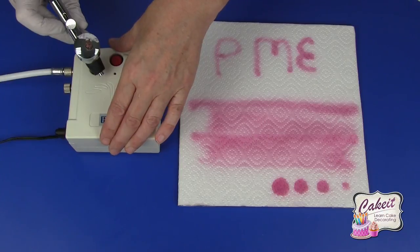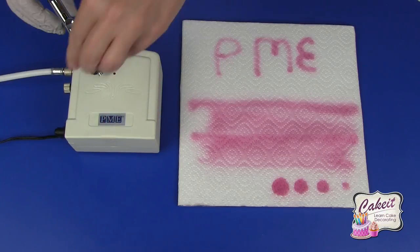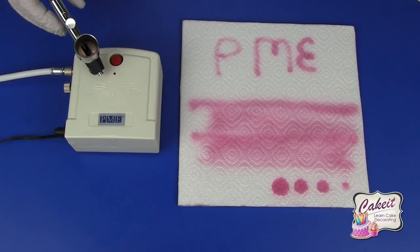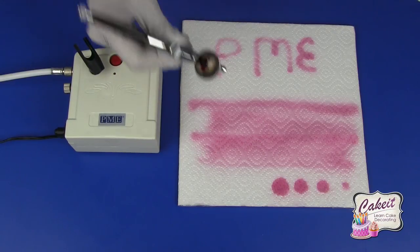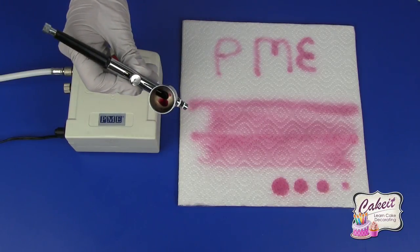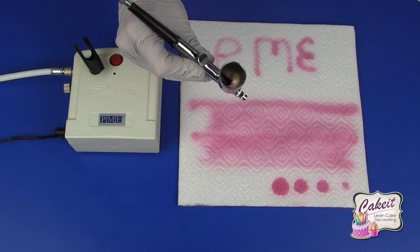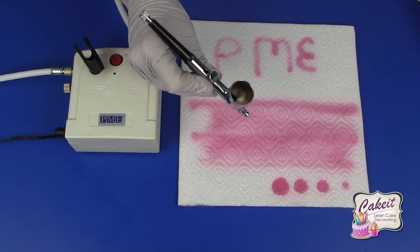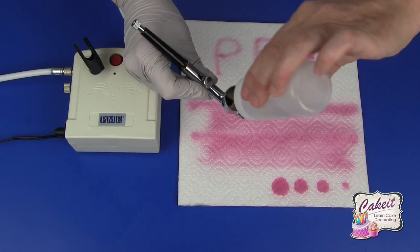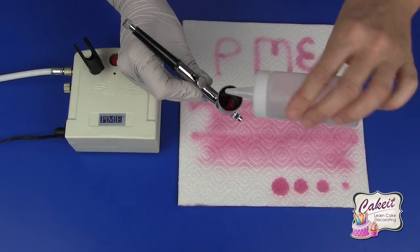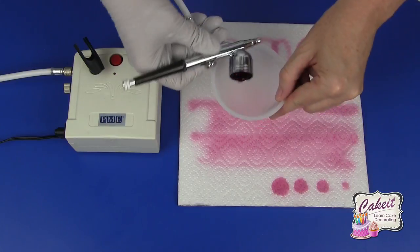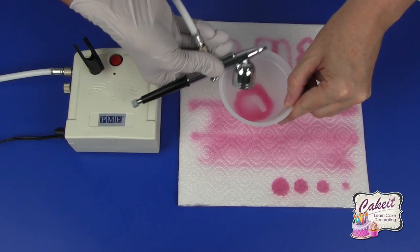So now I'm going to clean out my airbrush by removing the lid. Make sure that you remove any excess colour into the pot. So just tip that out. And make sure that you use lukewarm water to then add this into the well. Give this a rinse round and again remove that into a small bowl.